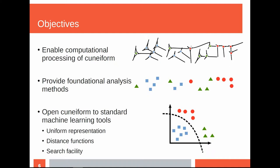First, we need a uniform representation of the script, and the most basic component is the wedge. We want to represent wedges in a uniform format. Further, we need a distance function — which two wedges are similar, which two wedges are dissimilar. If we have those things, we can provide a search facility, something like Google: you can type in a symbol you want and it finds all the tablets and all the locations where such a symbol is present. These three things enable computational processing of cuneiform, allowing us to count words in the corpus or find patterns occurring in a specific corpus of cuneiform tablets.